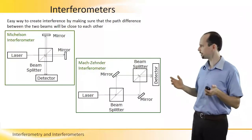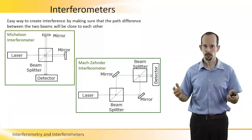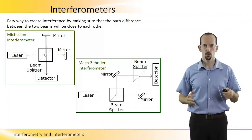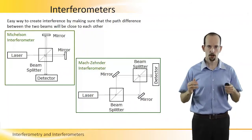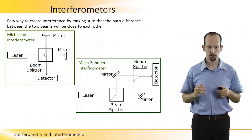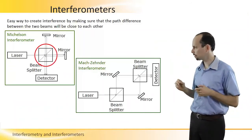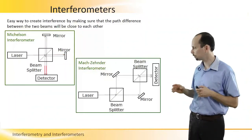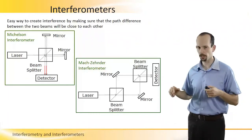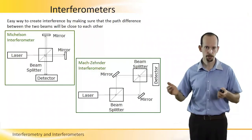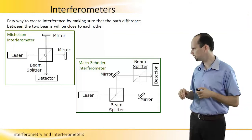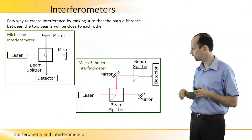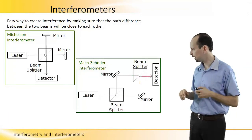How to practically create this interference? The answer is by using interferometers. Interferometers are simple optical devices using which we can create interference. We have two main optical interferometers. The first is the Michelson interferometer. It is based on a single beam splitter that splits the beam; the beams then hit mirrors and come back into the detector. The beam splitter splits the beam into two beams and then combines them again. This beam splitter can be made of a half-transparent mirror or a similar device.